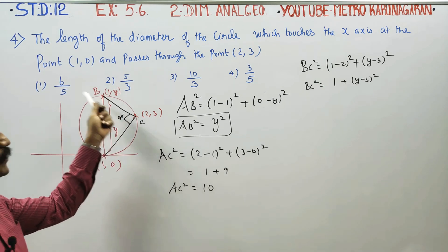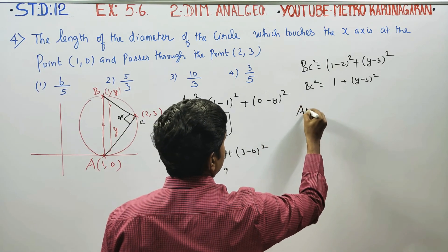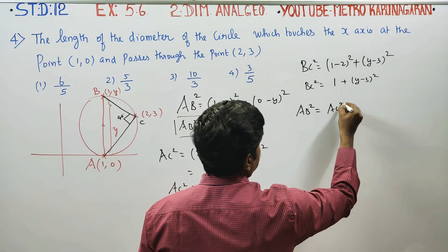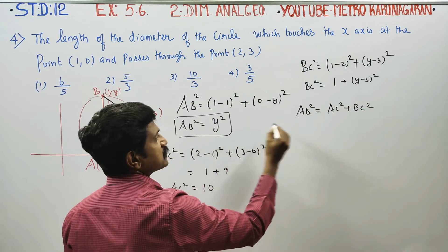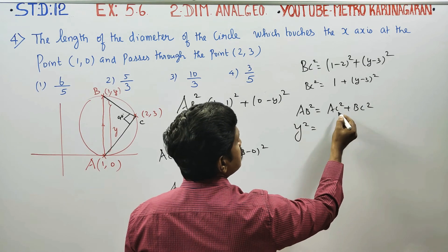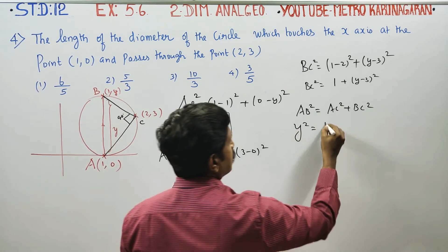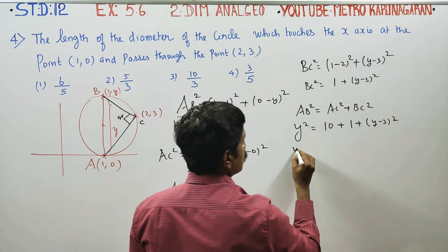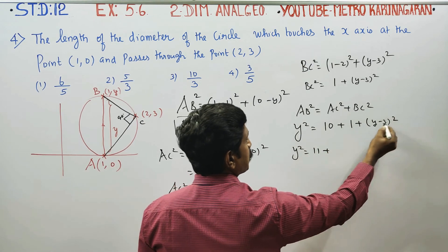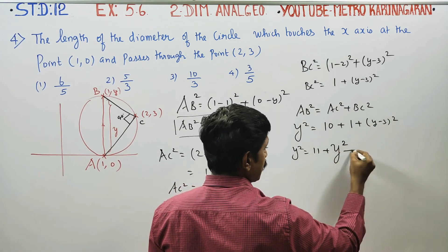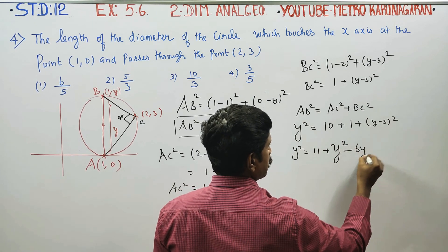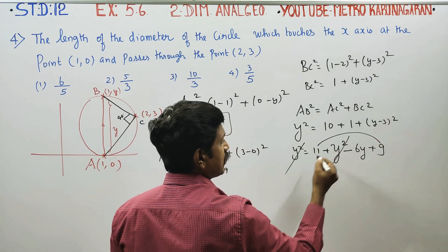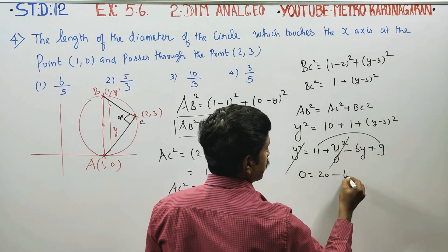Since the angle is 90°, by Pythagoras: AB² = AC² + BC². So y² = AC² + BC². AC² = 10, BC² = 1 + (y - 3)². Expanding (y - 3)²: y² = 10 + 1 + y² - 6y + 9. That gives y² = 20 - 6y + y². Cancelling y² from both sides: 0 = 20 - 6y.